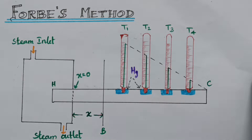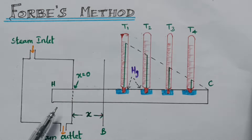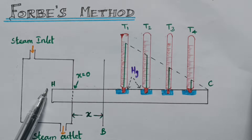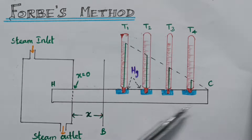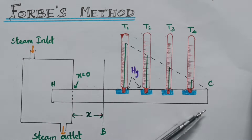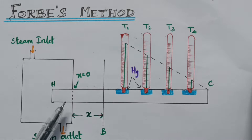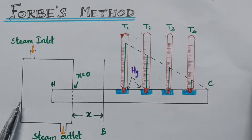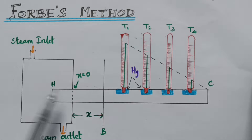This method is used to determine the absolute thermal conductivity of a good conductor, that is, a metal. It consists of a long uniform rod, referred to as H to C — H for the hot end and C for the cold end. One end of the rod is placed inside a steam chamber.